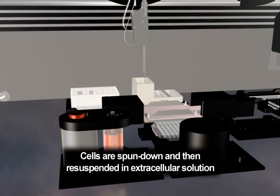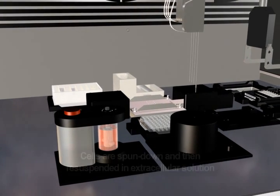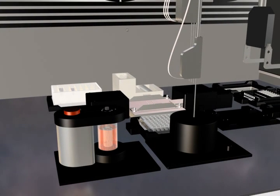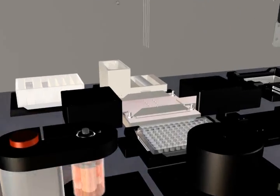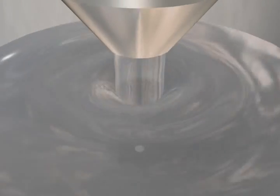An aliquot of cell solution is pipetted into the onboard centrifuge and the cells are spun down. The cells are then re-suspended in extracellular solution before addition to each of the 16 channels on the Q-Plate.